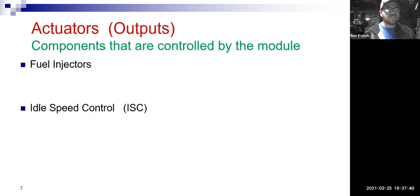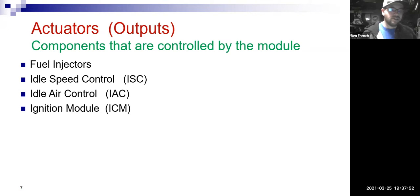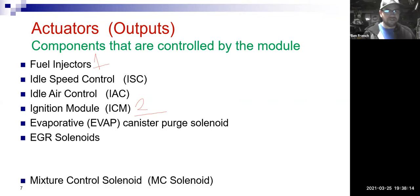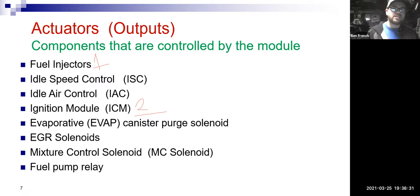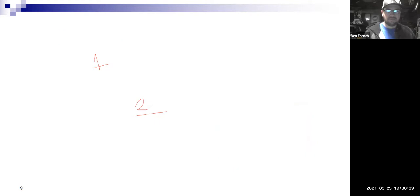Moving right along — of course outputs: the main things are your fuel injectors, but you have other stuff like some type of idle speed control, that could be an ISC motor or an IAC valve. Number one priority is the fuel injector, and number two would be what's going on with the spark plugs — if I don't have either one of those, the car's not running. Then you have things like EVAP canisters, EGR solenoids, and the fuel pump relay control. These are the outputs the computer controls, but it can't control these correctly if it doesn't have the right signals in on the inputs. Garbage in, garbage out.